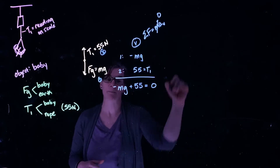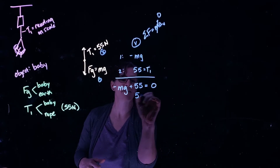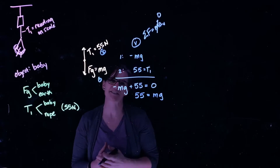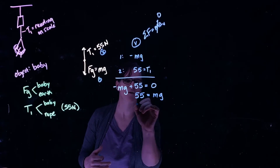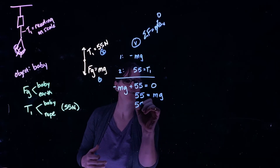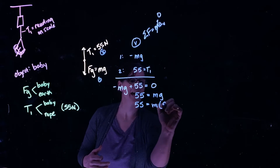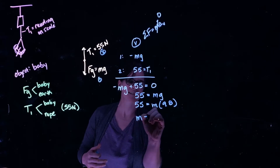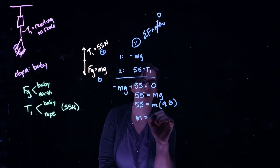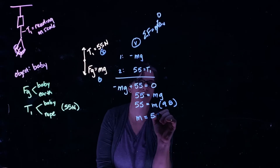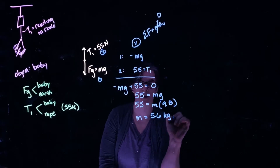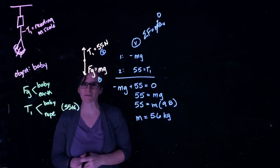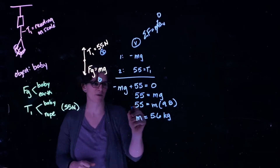Bringing mg over to the other side, we have 55 equals mg. Solving: 55 equals m times 9.8, and the mass equals 5.6 kilograms. So the mass of the child and basket together is 5.6 kilograms.